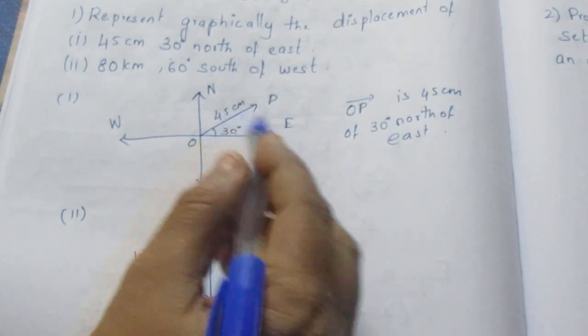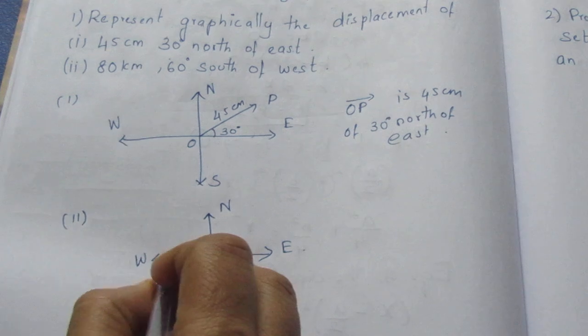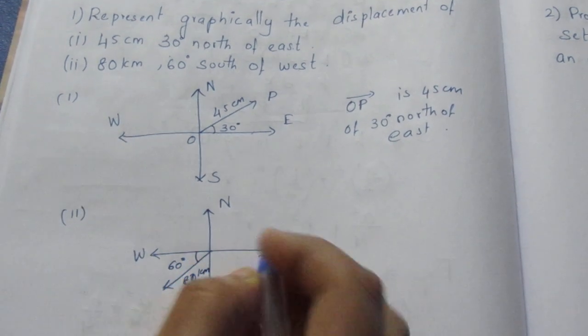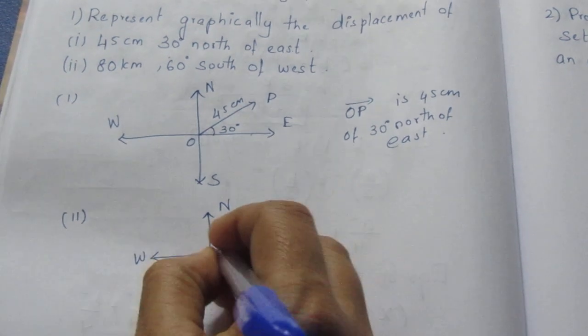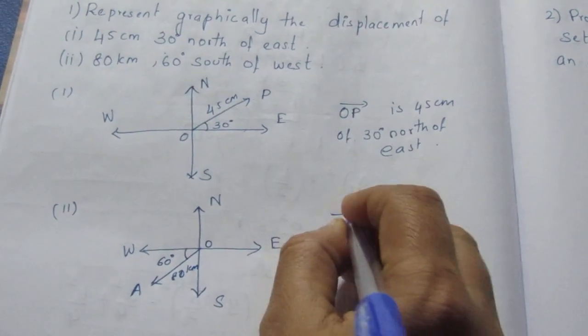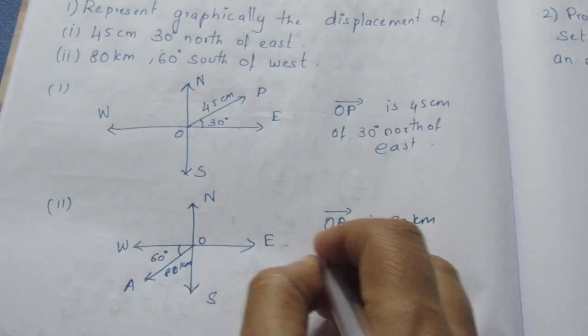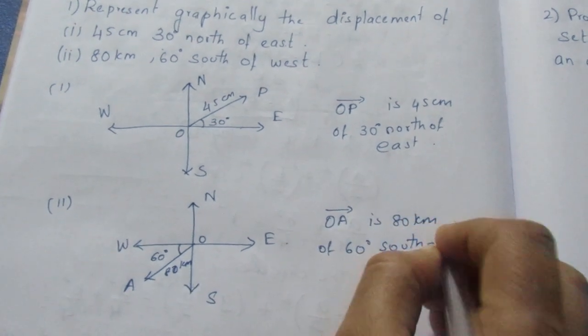East to north. If you look at west to south, it's 60 degrees. It's 80 kilometers. So, this is what I am going to say. One vector is 80 kilometers at 60 degrees south of west.